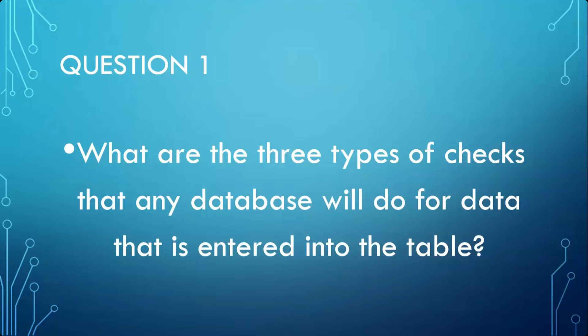So one way of implementing business integrity checks is through check constraints, which allow simple expressions with one condition or compound expressions with more than one condition. Another way is through triggers — not all rules can be implemented using check constraints, so we have triggers for that. In summary: first, data integrity using data types; second, entity integrity using primary key or unique key; third, business integrity.